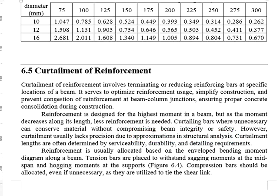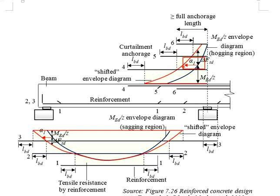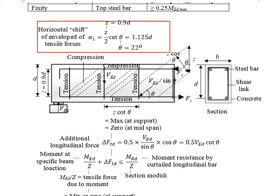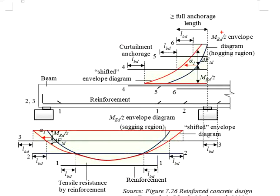Due to the nature of approximations in structural analysis, we cannot do curtailment in a very precise mode. Some tolerance is provided to cater for that. This links to a horizontal shift equivalent to alpha 1 from the original MEd per z envelope diagram, resulting in a shifted curve. The same applies to the sagging moment region — there is a horizontal shift of magnitude alpha 1. Alpha 1 is calculated based on a formula that is a function of z and theta. Note that the z in the MEd per z envelope diagram is the section modulus, which is a geometrical property of the beam cross-section.